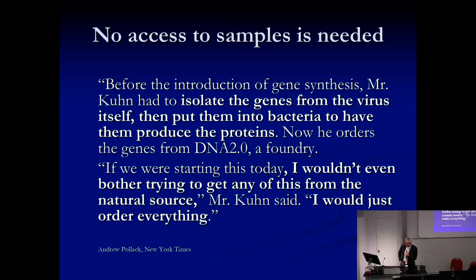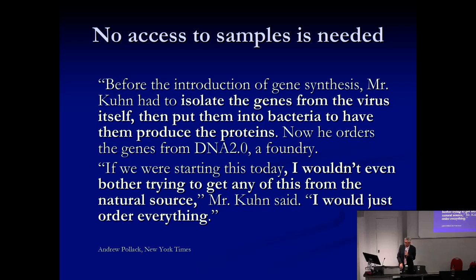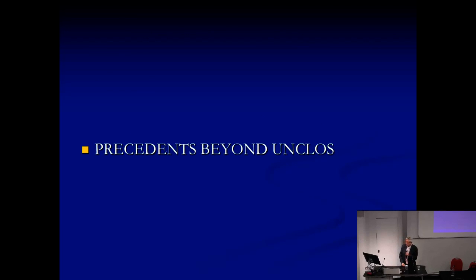Gene information is everywhere — everybody deposits genes online quickly, and a marine genetic resource or its genetic information can be readily obtained and redesigned. The DNA can be redesigned so thoroughly that it would be very difficult to trace it back to its origins. A New York Times article noted that before gene synthesis, a researcher had to isolate genes from the virus itself, but now one can simply order the genes from a DNA foundry. This is a very important transformation: 'If we were starting this today, I wouldn't even bother trying to get any of these from the natural source. I would just order everything.'